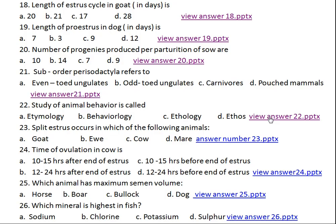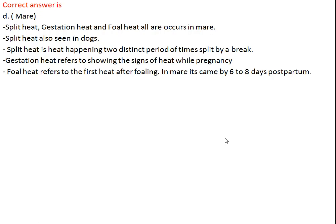Question number twenty-three: split heat occurs in which of the following animals? Option A: goat, Option B: ewe, Option C: cow, Option D: mare. The right answer is D, mare. In mare, split heat, gestation heat, and foal heat all three types of heat occur. Split heat is also seen in dog. Split heat is heat that happens in two distinct periods of time broken by a certain interval. Gestation heat refers to when the animal comes into heat during pregnancy, and foal heat is the immediate heat after parturition — in mare it occurs 6 to 8 days postpartum.